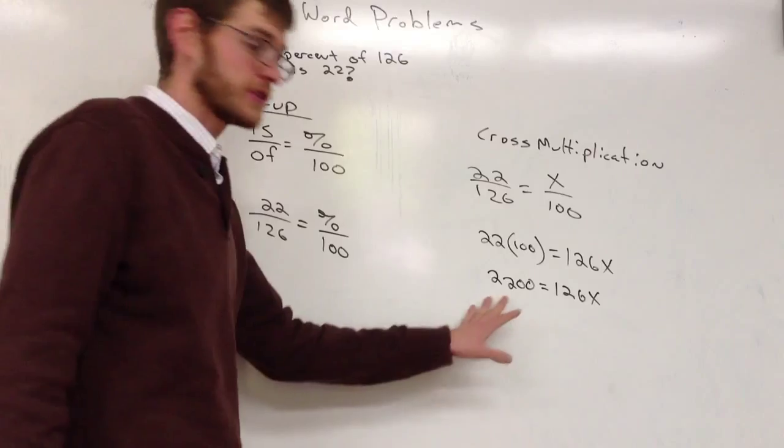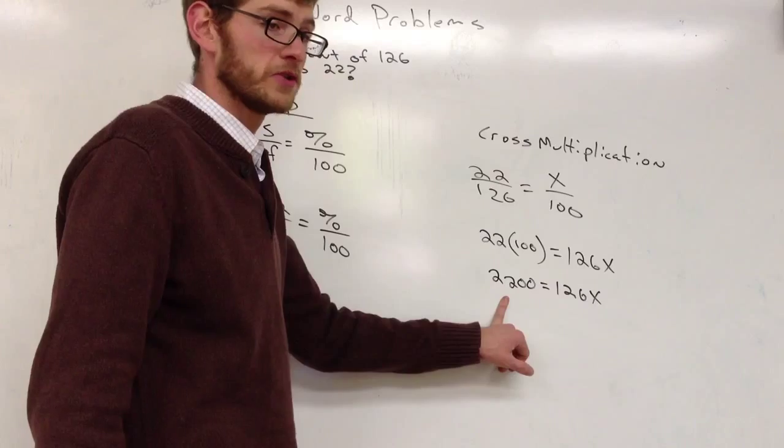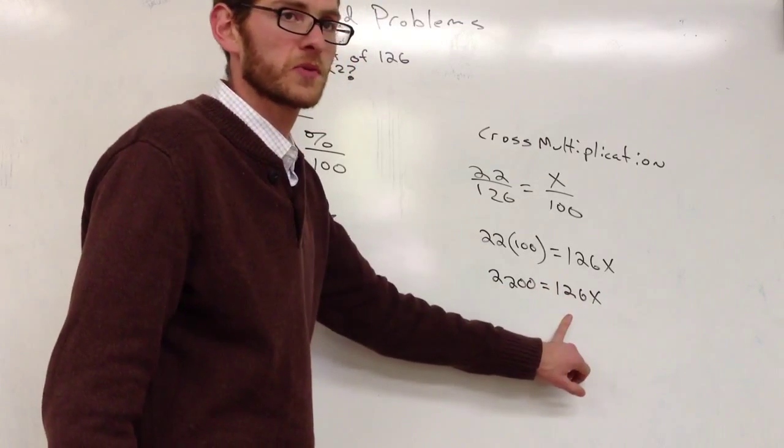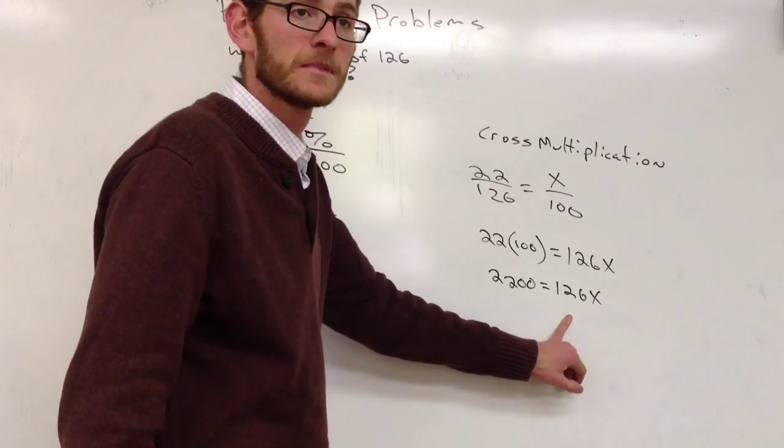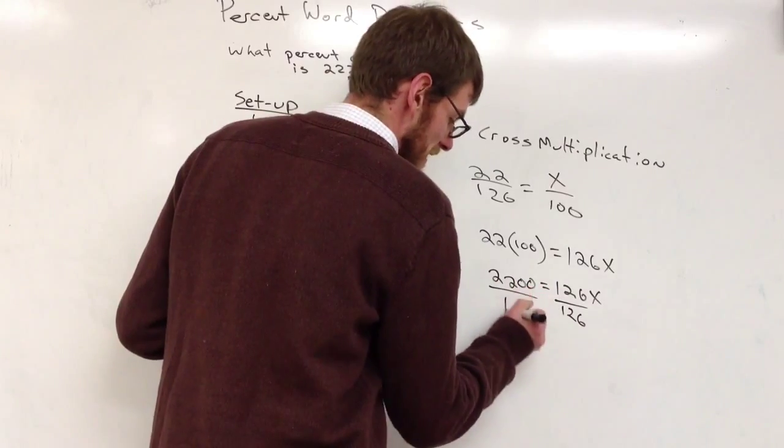This statement right here says something times 126 equals 2200. How do you think we get rid of this 126? Go ahead, Em. Do you divide it? We divide by 126. And then if we do it to one side, we need to do it to both sides.